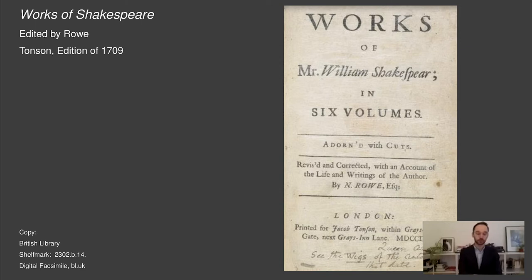Within the text of the 1709 edition itself, Rowe standardized the plays by inserting scene locations and dramatis personae lists. He regularized spelling and added a series of stage directions. He was, in other words, the first 18th century editor and the first named editor of Shakespeare's works. Rowe also wrote the first biography of Shakespeare, which was appended to all subsequent editions of the plays up until 1790.